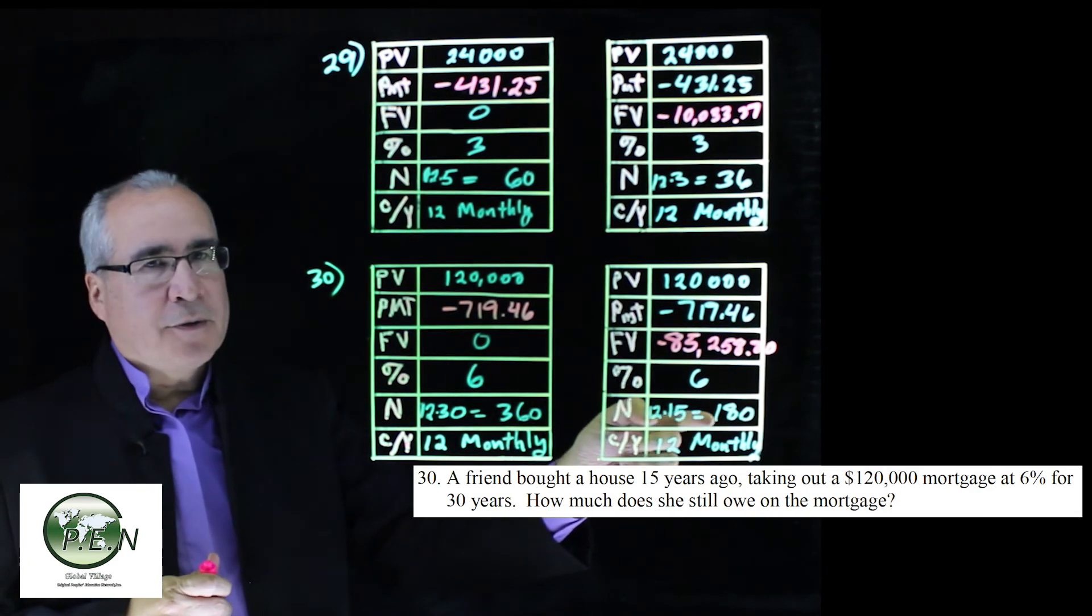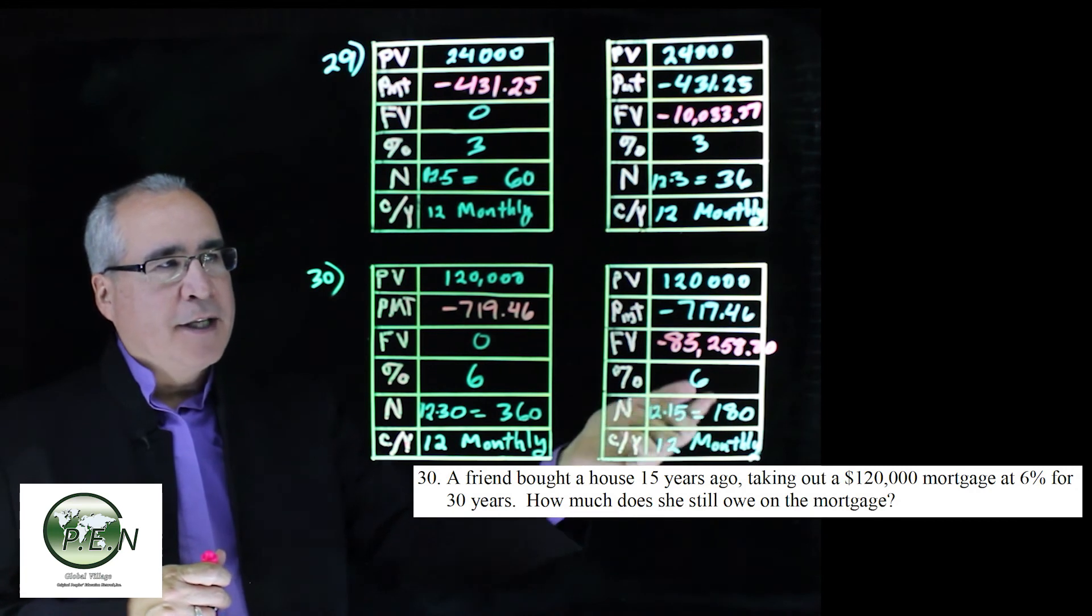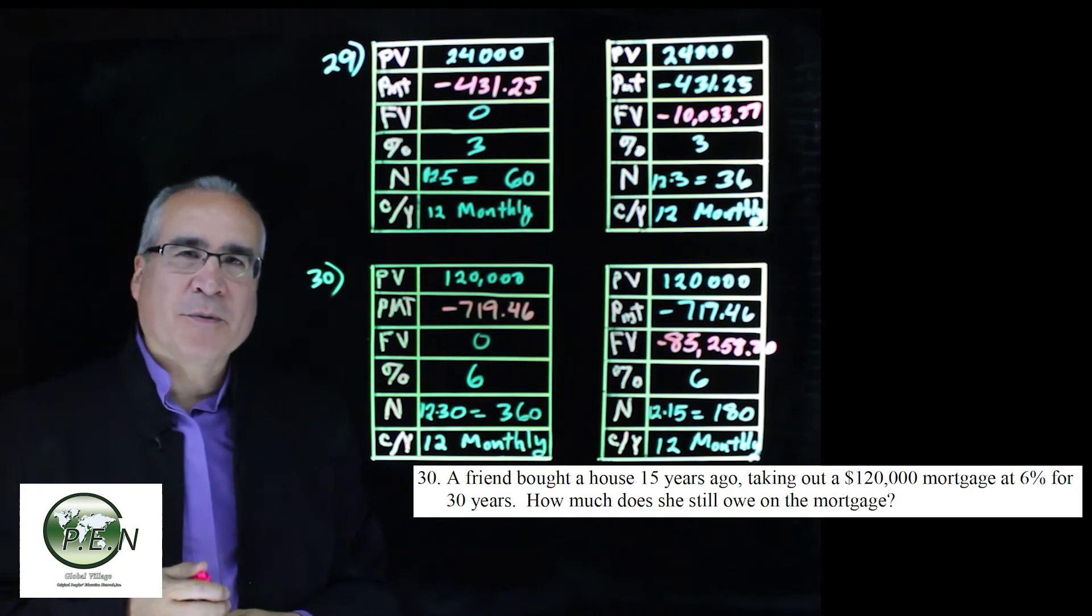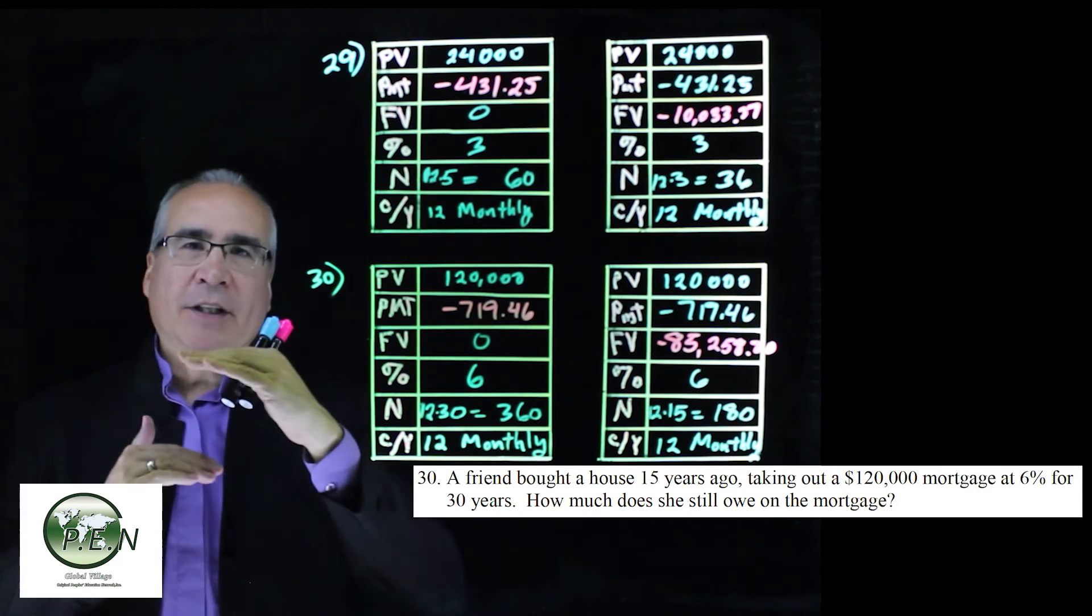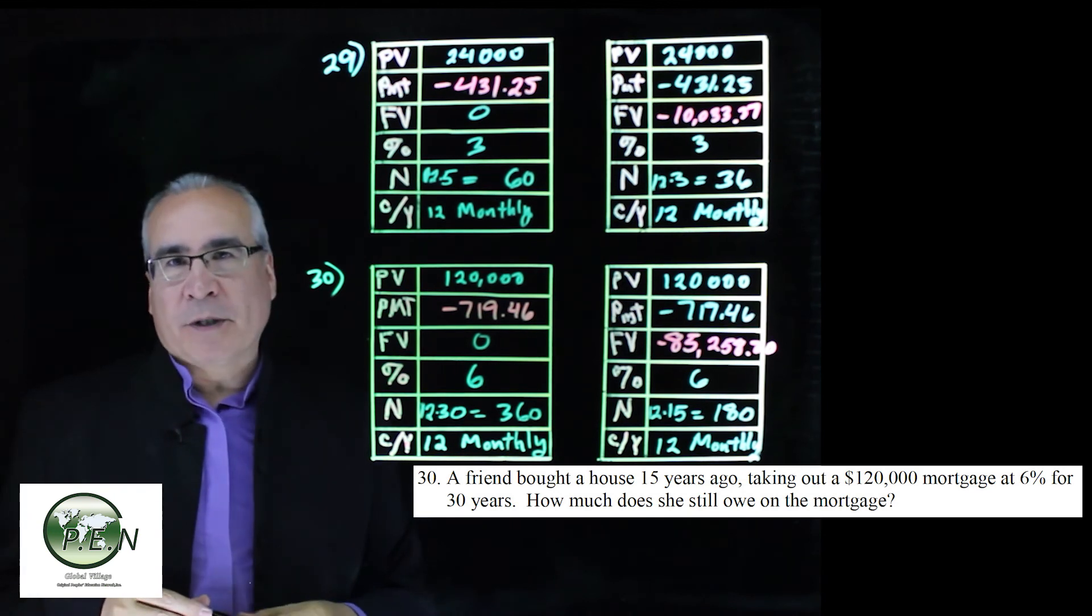It's interesting. They're halfway through the payments. They've made 180 out of 360 payments, but the loan is not halfway gone, and that's the way interest works. Remember, we pay the most interest at the beginning of the loan. Towards the end of the loan, we're paying more and more principal.